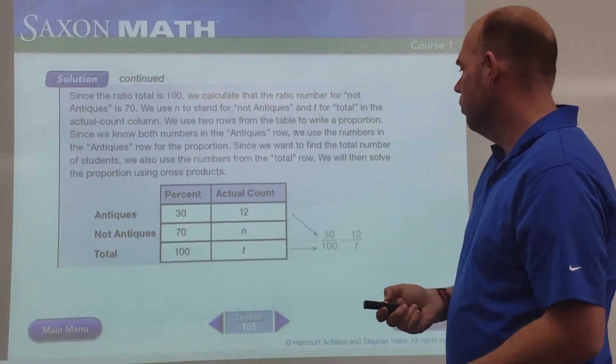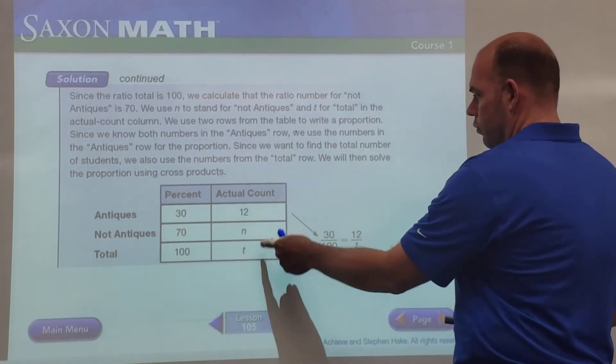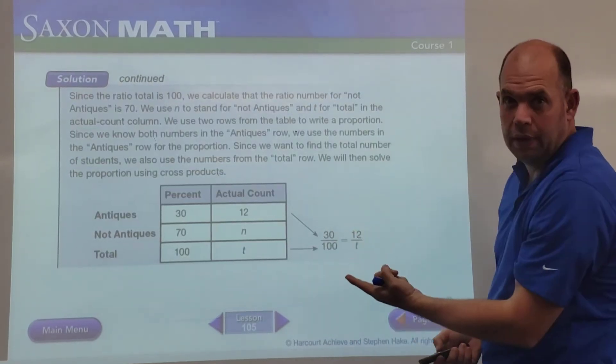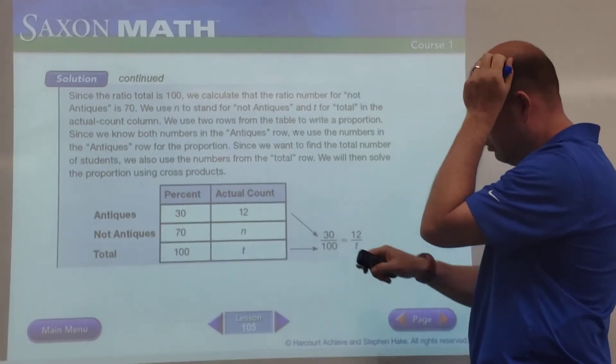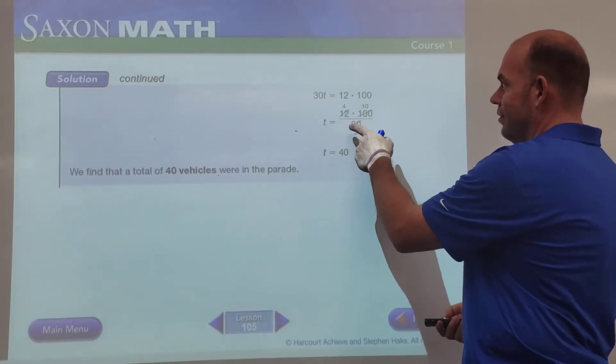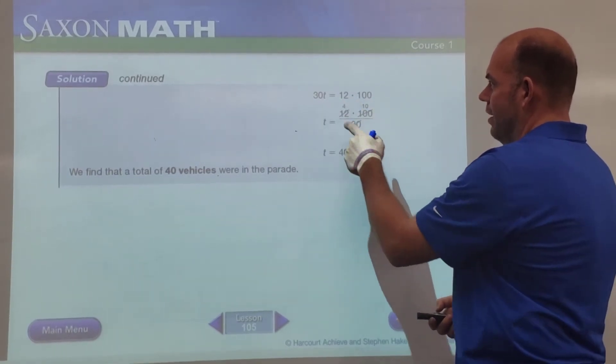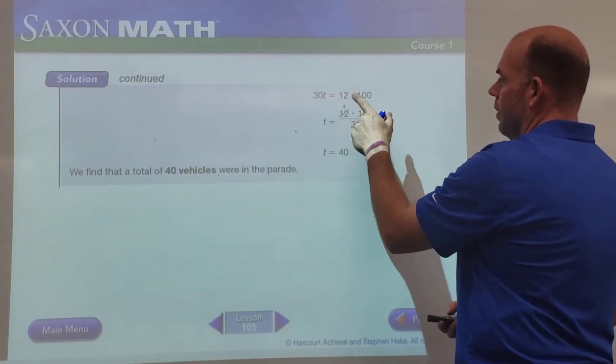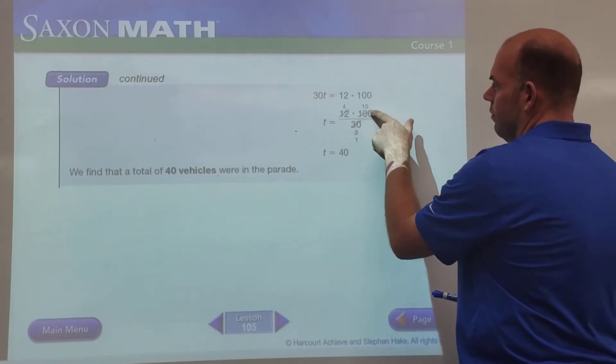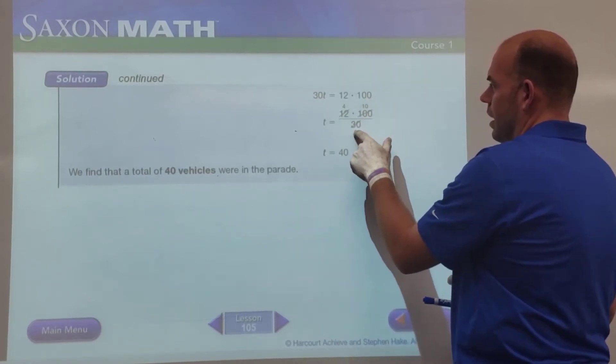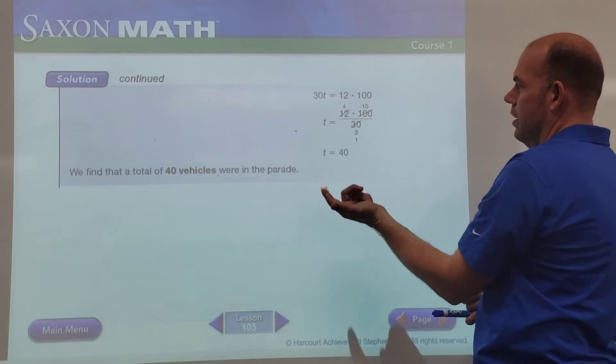So what we'll do is we'll take our 30 over 100 and our 12 over t, and then we're just going to put those together. 30t—we're cross multiplying again, we've practiced this—30 times t and 12 times 100, so we could just do 1200 divided by 30 and get our answer of 40. But they like to do it this way, so we take our factors, 12 and 100. By cross multiplying we get 30t, so we divide here to get rid of the 30. So it's 12 times 100 divided by 30, so then we look for our common factors. If we divide 30 by 10 we get 3, divide 100 by 10 we get 10, then we're left with that 3. 12 divided by 3 is 4, 3 divided by 3 is 1, so now all we have left is 4 times 10 over 1.